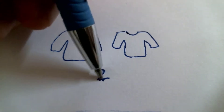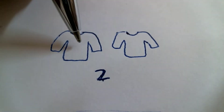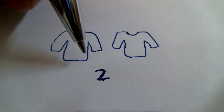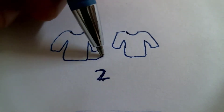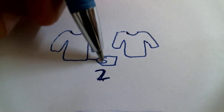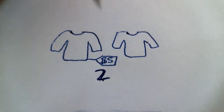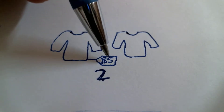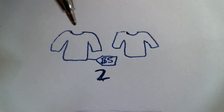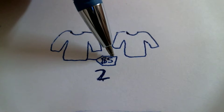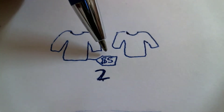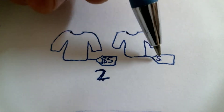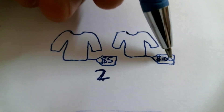There are two shirts here — one shirt, two shirts. This shirt costs five dollars. How much does this shirt cost? Does this shirt cost five dollars? Yes. This shirt costs five dollars and this shirt costs $100.